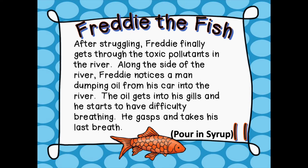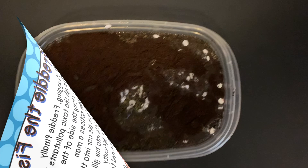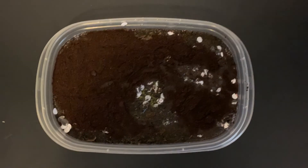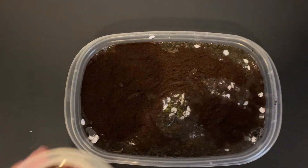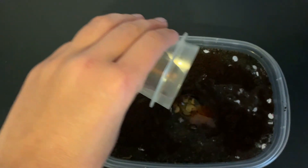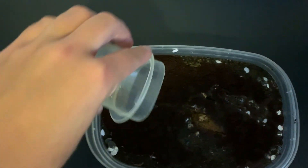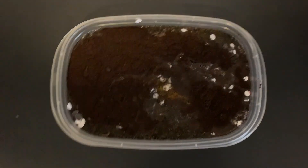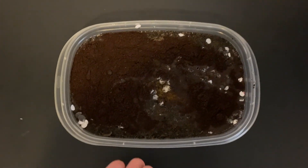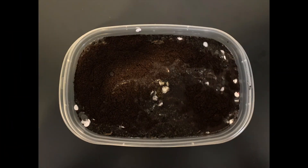After struggling, Freddie finally gets through the toxic pollutants. Along the side of the river, Freddie notices a man dumping oil from his car into the river. The oil gets into his gills and he starts to have difficulty breathing. He gasps and takes his last breath. Now I'm going to add the syrup — and as you can see, we can barely see Freddie anymore. He's not feeling too great and is having difficulty breathing.